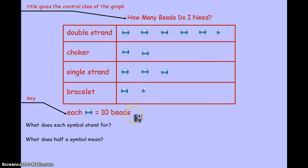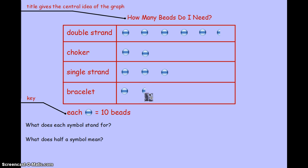You're also going to need to have a key to show what each picture represents — what does each symbol stand for? And also think about if you have half of a symbol, what does that mean? So as you're starting to think about what kind of pictograph you're going to create, think about all these pieces: you need your title, your data, the areas of your data, your data collection pieces, plus what your key is going to be.